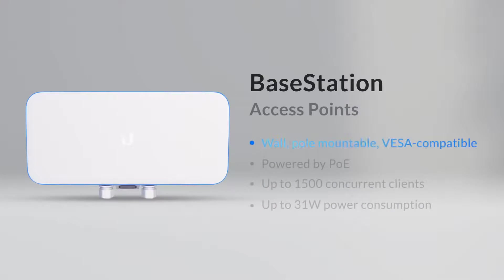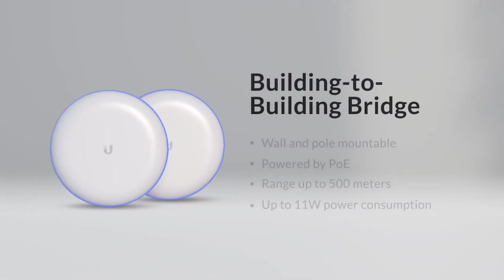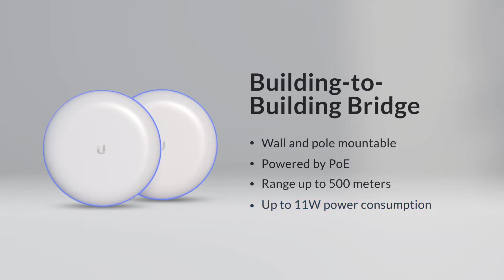The base station is mounted on a wall or pole and is VESA compatible, powered by PoE, allows up to 1500 concurrent clients, and has a maximum power consumption of 31 watts. The building-to-building bridge is wall and pole mountable, powered by PoE, has a range of up to 500 meters, and has a maximum power consumption of 11 watts.